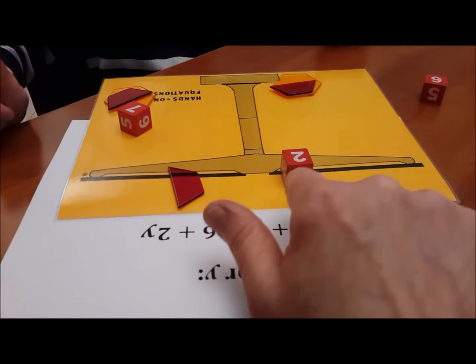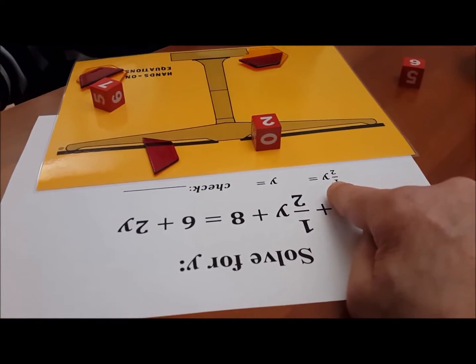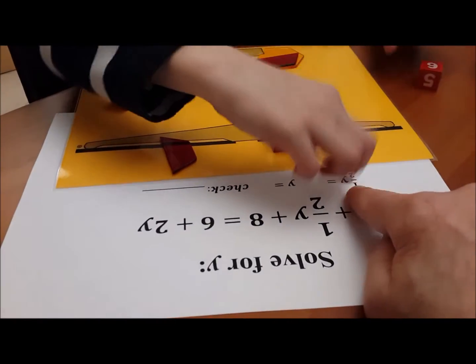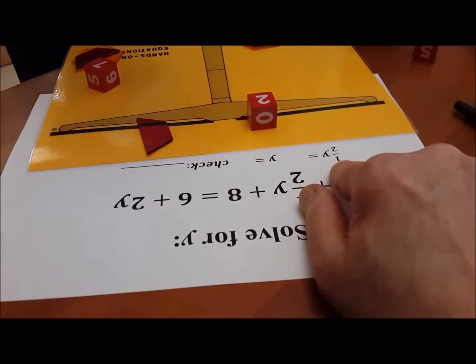Good. So now, how much is each red block? Two. Okay, so can we write the answer here? We need to write down how much is half of y. Four. No, not how much is y. How much is half of y?